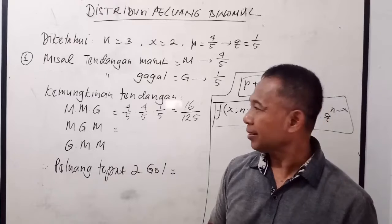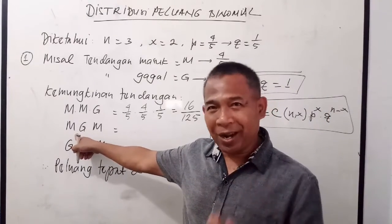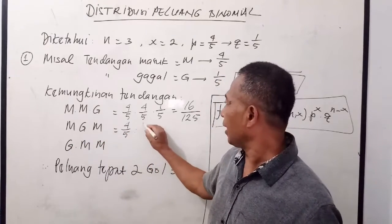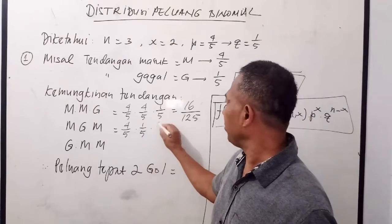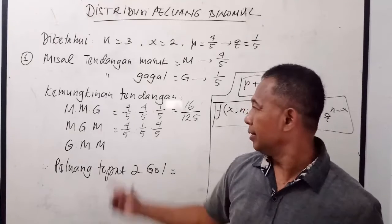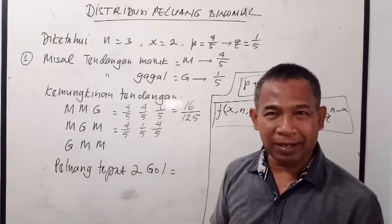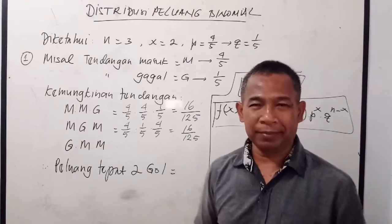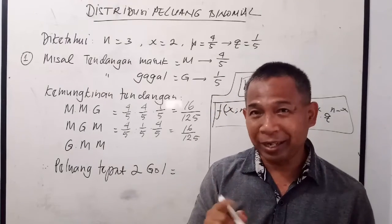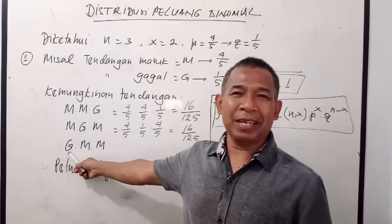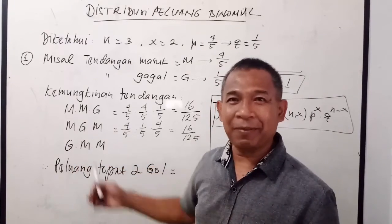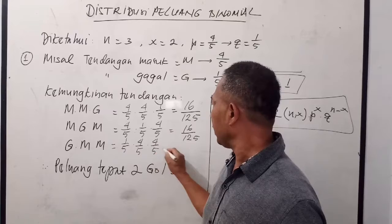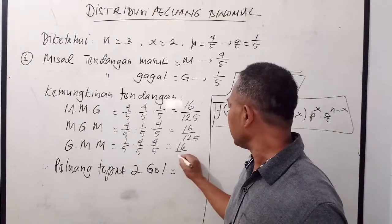Atau kemungkinan kedua: tendangan pertama masuk, yang kedua gagal, yang ketiga masuk — M, G, M. Peluangnya: 4/5 × 1/5 × 4/5 = 16/125. Atau kemungkinan ketiga: tendangan pertama gagal, yang kedua masuk, yang ketiga masuk — G, M, M. Peluangnya: 1/5 × 4/5 × 4/5 = 16/125.